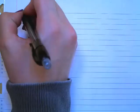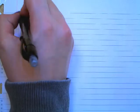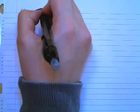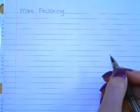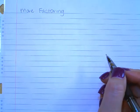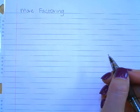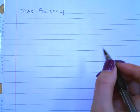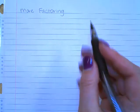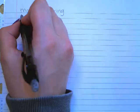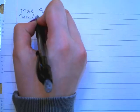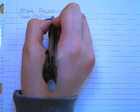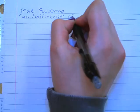In the other video on factoring, I reviewed quite a few methods of factoring, but I left two out because there are different types of factoring that you probably would have learned more recently, and so I wanted to address them specifically. So two different types of factoring. The first one we're going to look at is sum and difference of cubes.